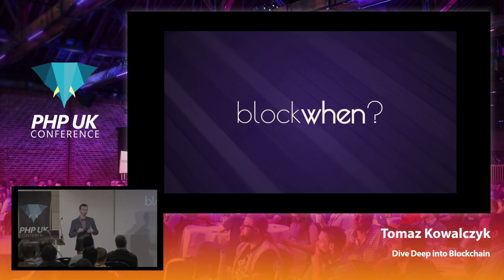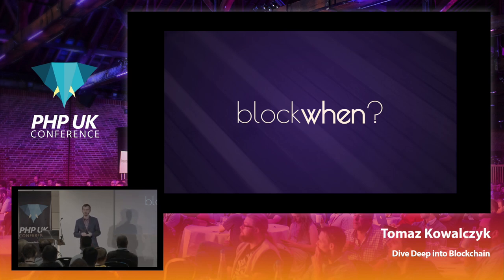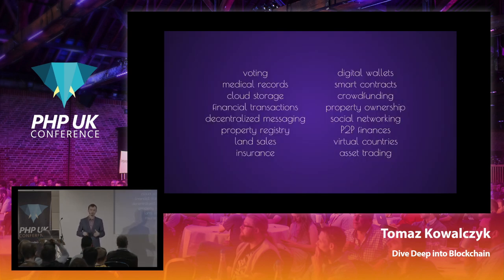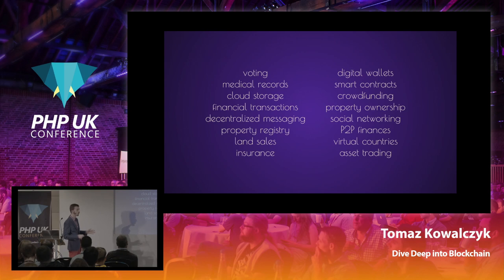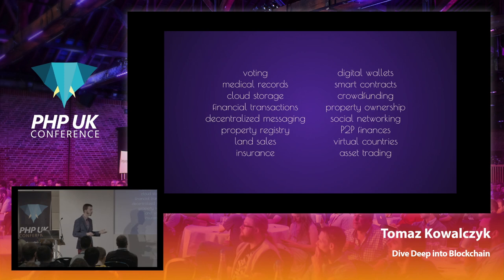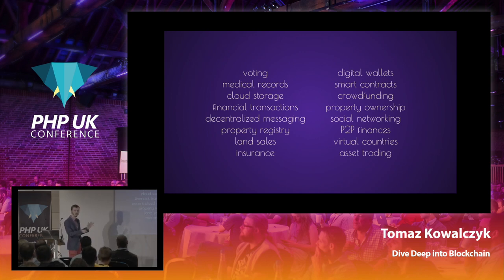Now that we've covered all the properties, let's talk about when people use blockchain. The problem is they use it for virtually everything. Close your eyes and imagine a problem you'd like to be solved — someone is probably already working on it. Examples include voting, medical records, messaging, property registry, crowdfunding, digital wallets, finances, and even virtual countries that store their laws in blockchain.